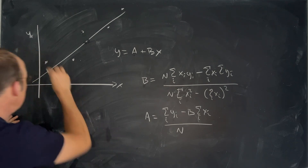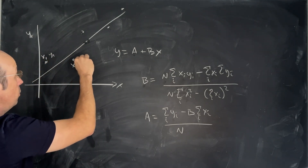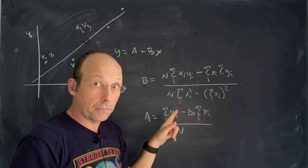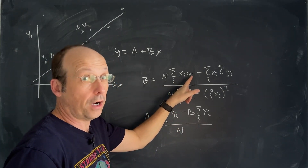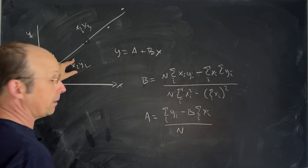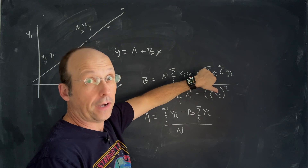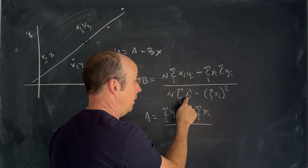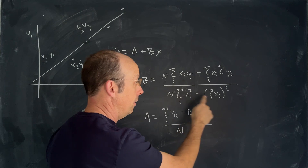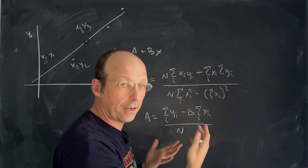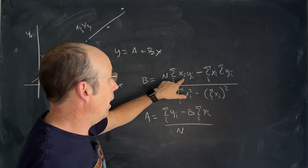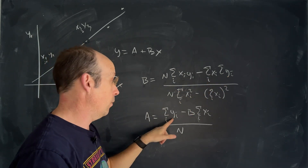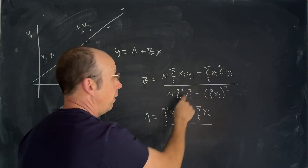N is the number of data points. XI and YI are the individual X and Y values — X1 Y1, X2 Y2, X3 Y3, and so forth. I need to multiply each X by its Y and sum them all up. Then I need the sum of all X values, the sum of all Y values, and the sum of X squared. So I have four different sums to calculate: sum of XY, sum of X, sum of Y, and sum of X squared.